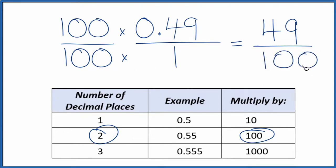And we have our fraction, 49 over 100. And we can't reduce this any further. So the decimal 0.49 equals the fraction 49 over 100. If you divide 49 by 100, you'll get 0.49.